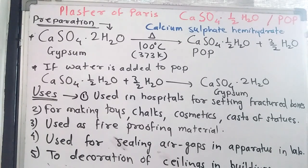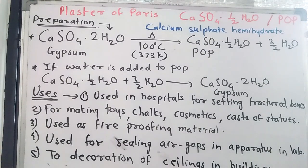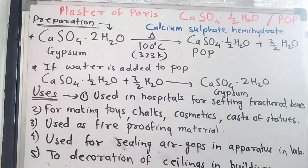The second reaction is exactly the opposite: if water is added to POP (CaSO4·½H2O), 3/2 water molecules are added and it converts back into gypsum, CaSO4·2H2O. These are the two reactions for plaster of Paris.